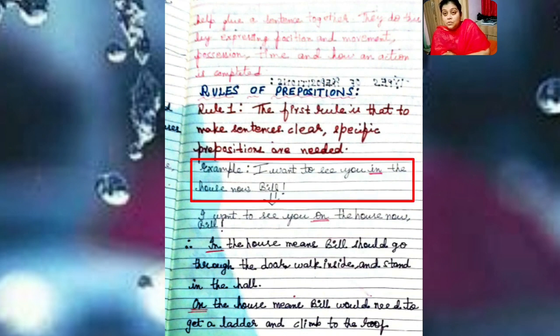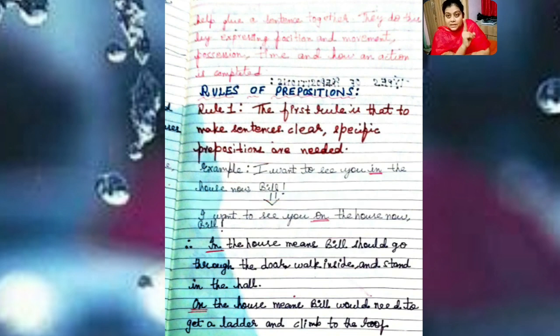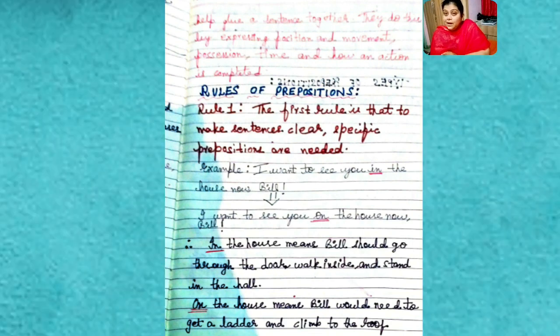Case number one. Case number two is: I want to see you on the house, Bill. In the first case, I have used 'in' and in the second case I have used 'on.' Now look at this difference. In the house—when I say I want to see you in the house, Bill, Miss Bill should go through the door, walk inside, and stand in the house.